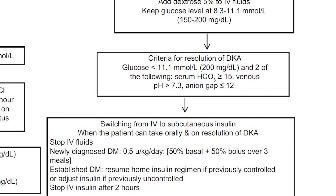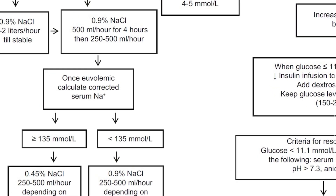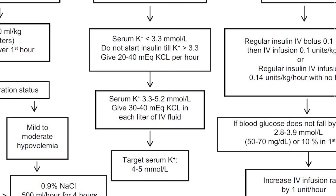For potassium: if potassium is less than 3.3 mmol/L, do not start insulin until potassium is corrected — give 20 to 40 mEq KCl per hour. If potassium is between 3.3 to 5.2, give 30 to 40 mEq KCl per liter of IV fluid. If potassium is greater than 5.2, do not give potassium. The target serum potassium is 4 to 5 mmol/L.